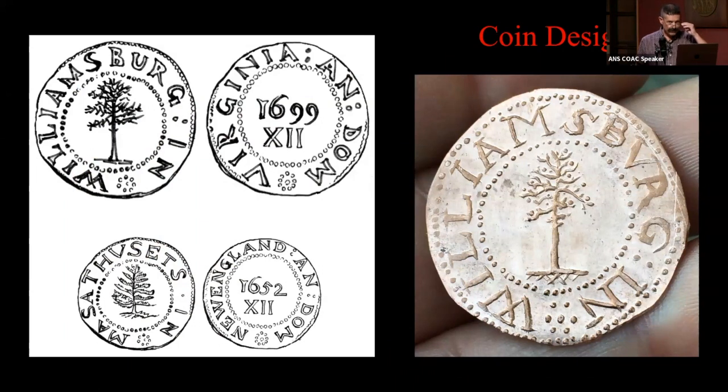The coins that we decided to produce, we don't want to be accused of being counterfeiters. We're not counterfeiting anything. I basically took a large planchet pine tree shillings design. Instead of Massachusetts in New England and DOM 1652, we went with Williamsburg in Virginia and DOM 1699 for the date of the founding of Williamsburg.